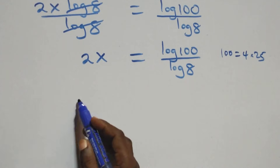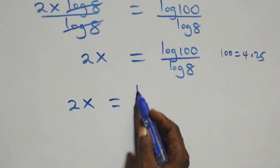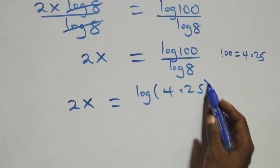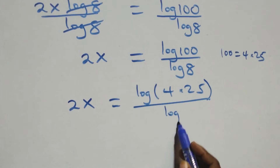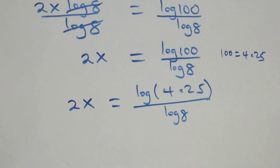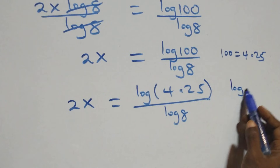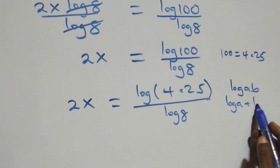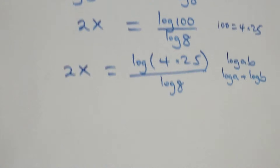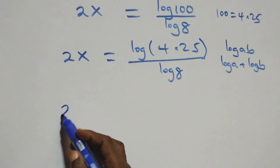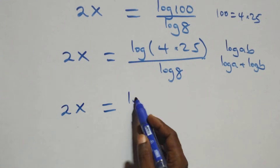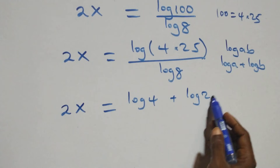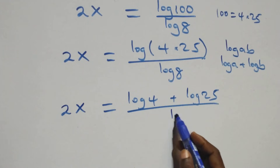Next, we can rewrite 100 as 4 times 25. So 2x equals log(4 times 25) over log 8. This follows the product rule of logarithms: log of a times b equals log a plus log b. So we have 2x equals log 4 plus log 25, all over log 8.